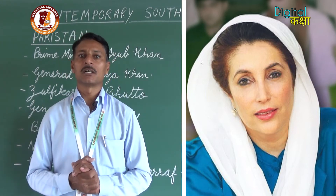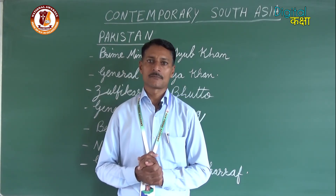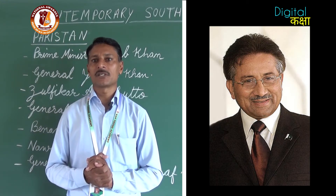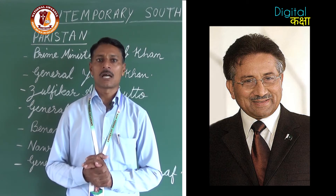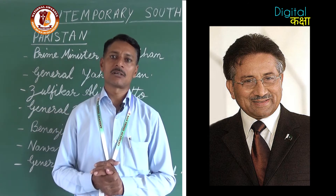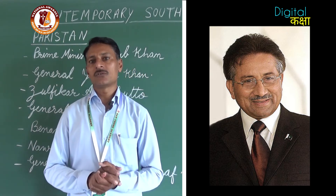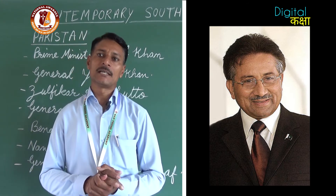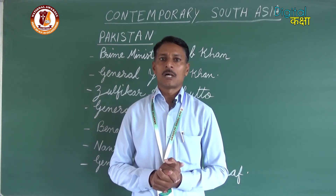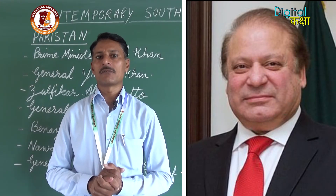Benazir Bhutto was too much criticized in the country. In such circumstances, again the army stepped in. General Pervez Musharraf removed Prime Minister Nawaz Sharif from power, and General Musharraf got himself elected as president in 2001. There were several factors which led to the failure of Pakistan building a stable democracy. After Musharraf, again a democratic form of rule was set up under Prime Minister Nawaz Sharif.